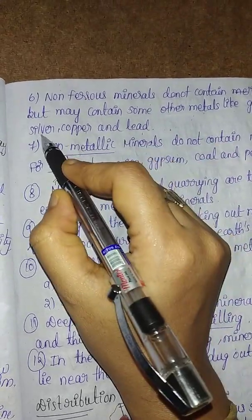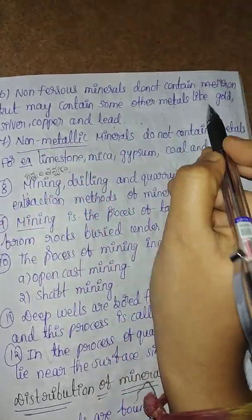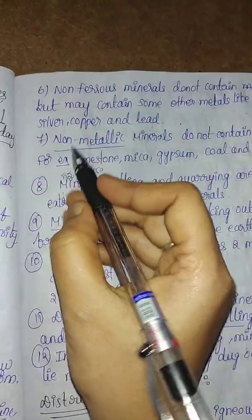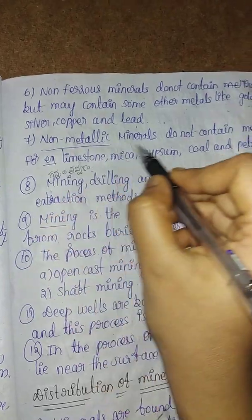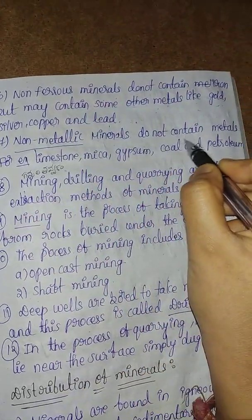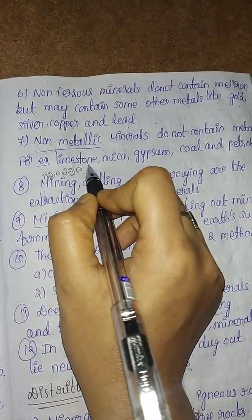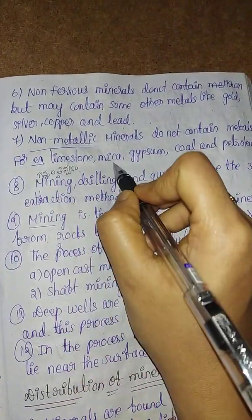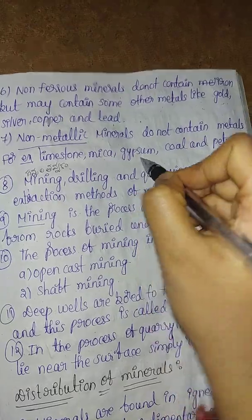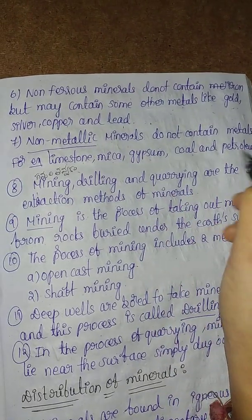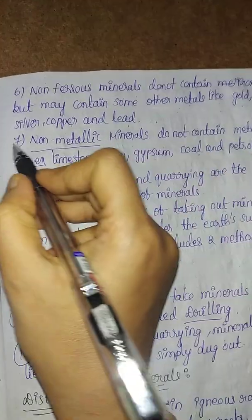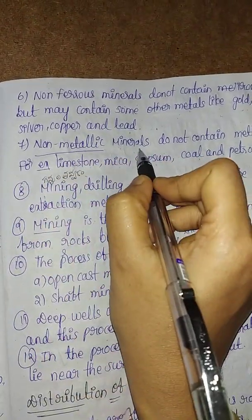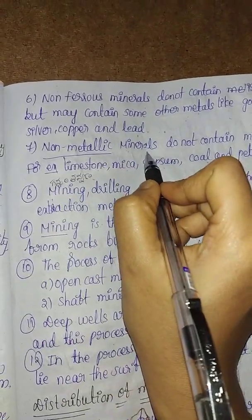Non-metallic minerals do not contain metals. For example, limestone, mica, gypsum, and coal are non-metallic minerals.